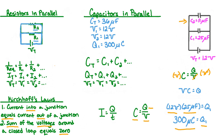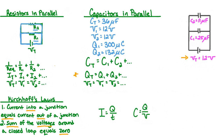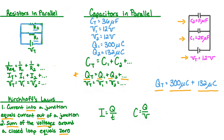Let's do the same thing but this time for C2. We determined earlier that the potential difference across C2 was 12 volts, and we know from the diagram that the capacitance is 11 microfarads. When we multiply 12 volts by 11 microfarads, we get a charge stored on capacitor 2, Q2, of 132 microcoulombs. Now we need to determine the total charge using the equation Qt equals Q1 plus Q2. Plugging in the values, Qt equals 300 microcoulombs plus 132 microcoulombs, giving us a total charge of 432 microcoulombs.